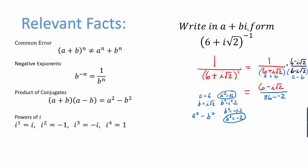Now we just need to simplify to get into a plus bi form. We've made some progress because we have the i out of the denominator. So now I'm going to subtract in the denominator, leaving the numerator the same. 36 plus 2 is 38 and then I'm just going to distribute this division to each term, giving us 6 over 38 minus i root 2 over 38.